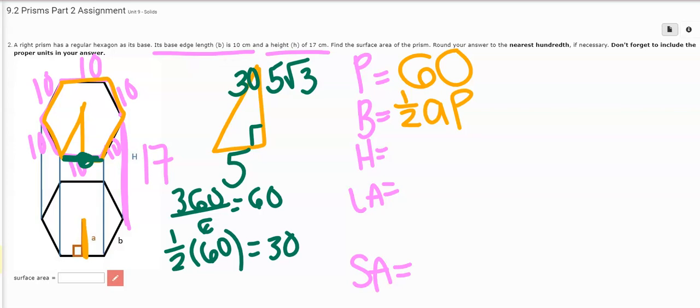So I can find my apothem by memorizing that, or I could even find the tangent. But when I get 5 square root of 3, I'm going to turn that into a decimal and I'm going to leave that as 8.66. That's going to be the number that I use for this.